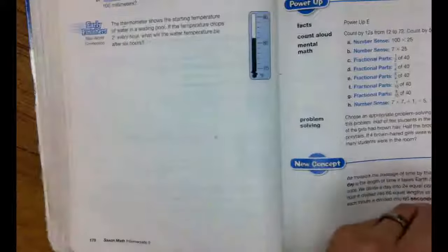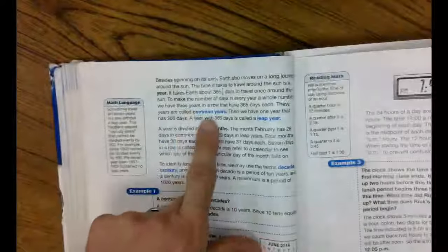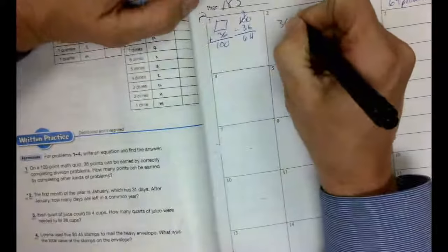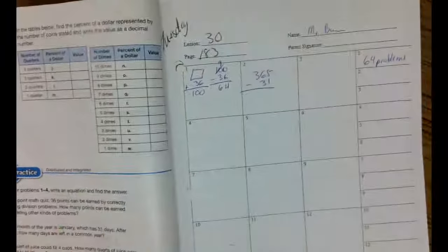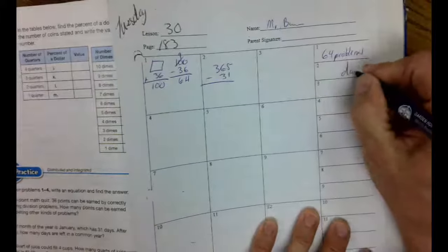Now maybe you knew that already, and then you wouldn't have to look it up. 365 minus January, which is 31 days, would give you what? And then your label should be days, and that one you could solve on your own.